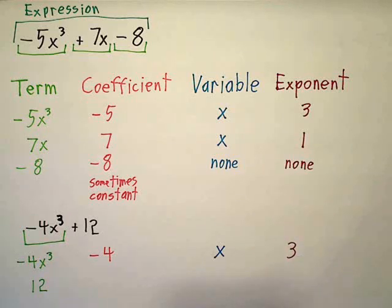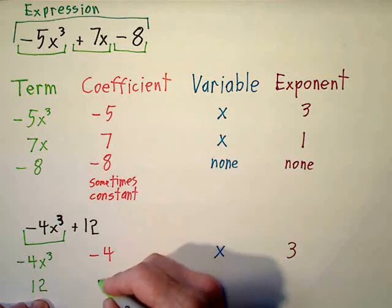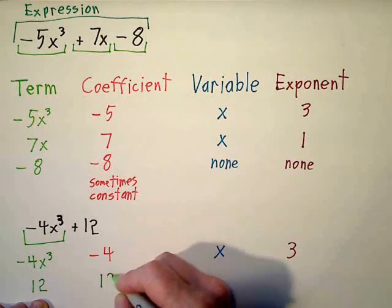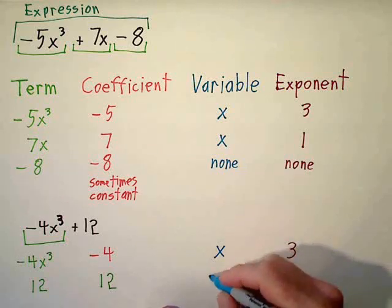So a couple more examples. They're sort of making us call this 12 a coefficient. I would rather just refer to it as a constant. And then for the variable and exponent, they're sort of forcing us to say none.